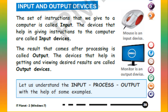The result that comes after processing is called output. The devices that help in getting and viewing desired results are called output devices. Let us understand the input-process-output concept with the help of some examples.